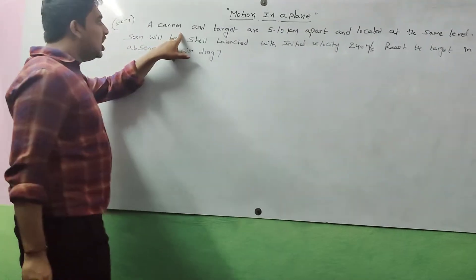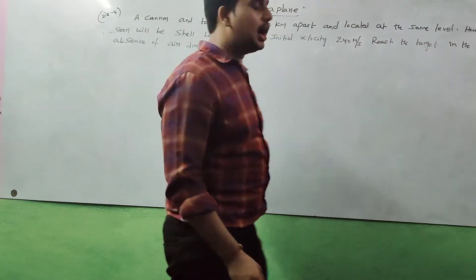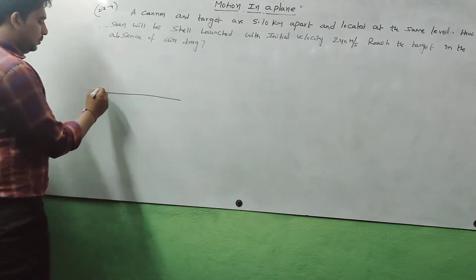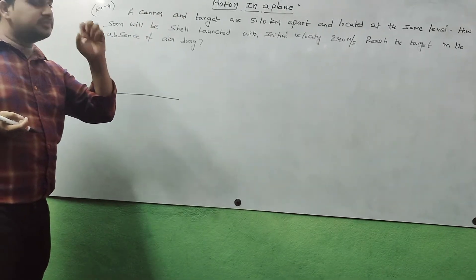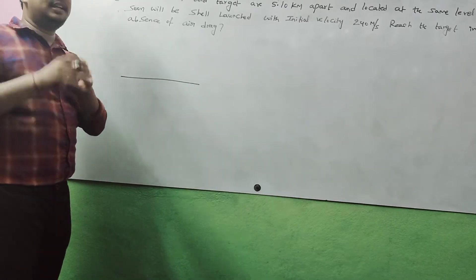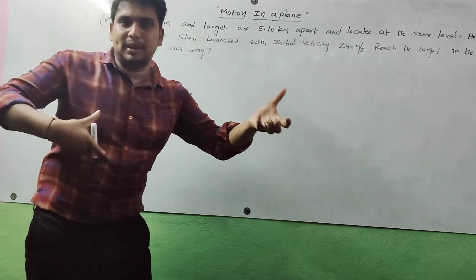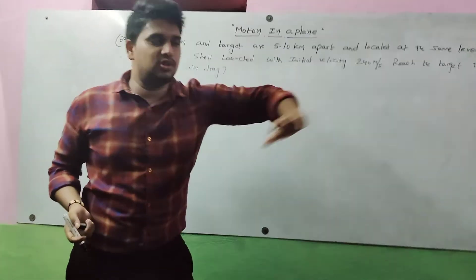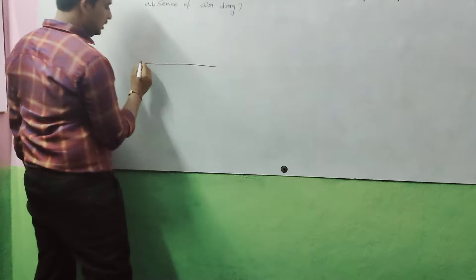Example four: a cannon and target are 5.10 kilometers apart and located at the same level. In ancient days, cannons were used in wars — cylindrical pipes used to send shells, which are nothing but bombs, to hit a target located at some far distance.